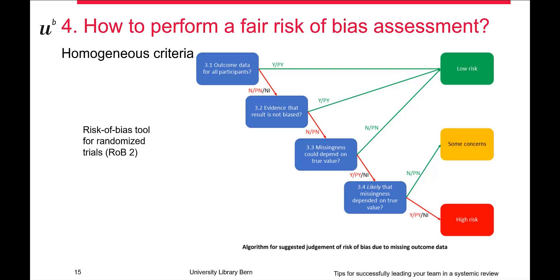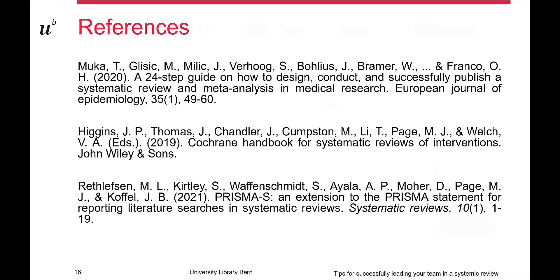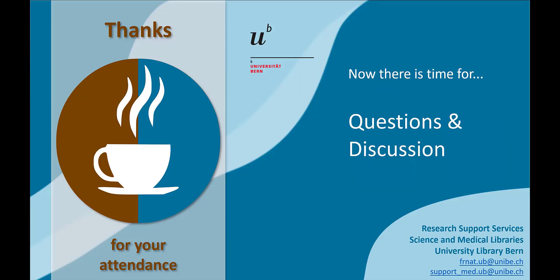For good standardization, discuss with your team which answer you will choose when you find information about missing participants in an article. The impact depends on your research question and the context of your study — so these details need to be discussed with your team before performing the risk of bias assessment. These are some references that could be useful, and now we are in the question and discussion section. Thank you.